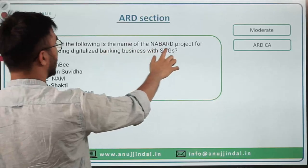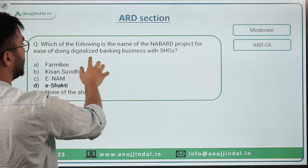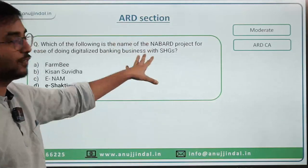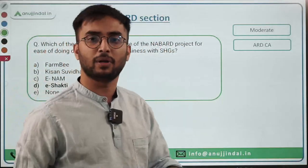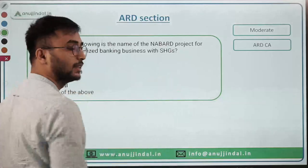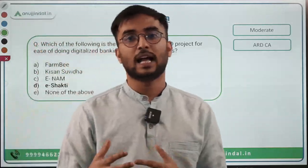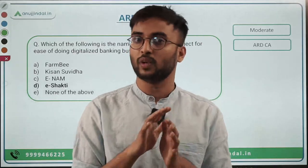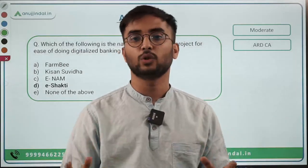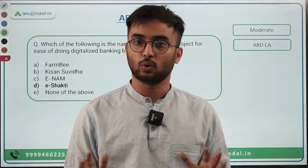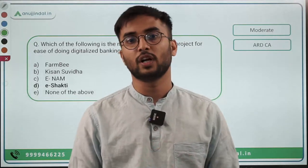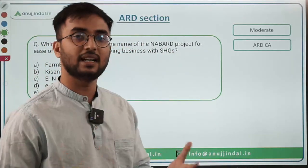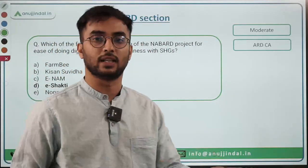'Which of the following is the name of the NABARD project for ease of doing digitalized banking business with SHGs?' — The answer is E-Shakti, covered in current affairs/Spotlight. Most current affairs and general awareness questions are covered in Spotlight, so study it rigorously. For the static part, trust the live lectures and courses for in-depth understanding and conceptual clarity.